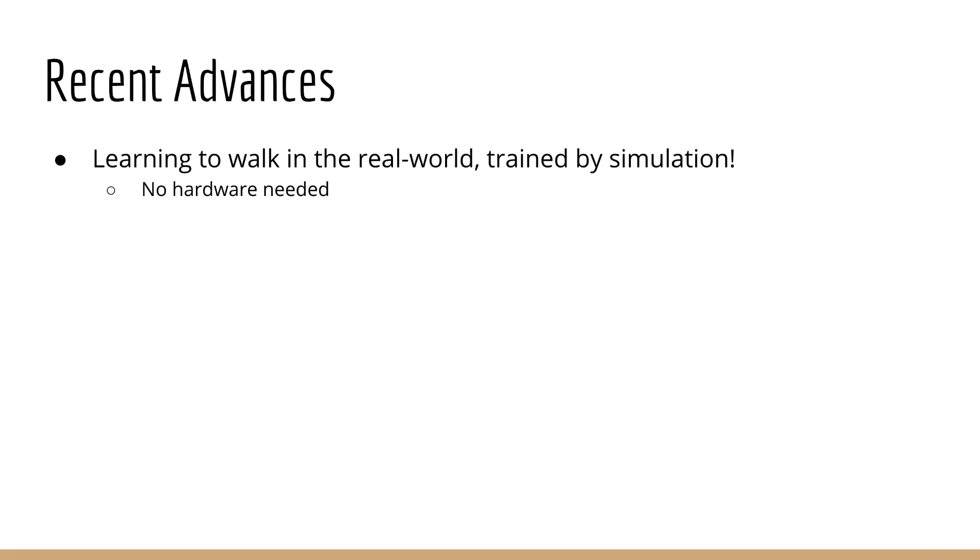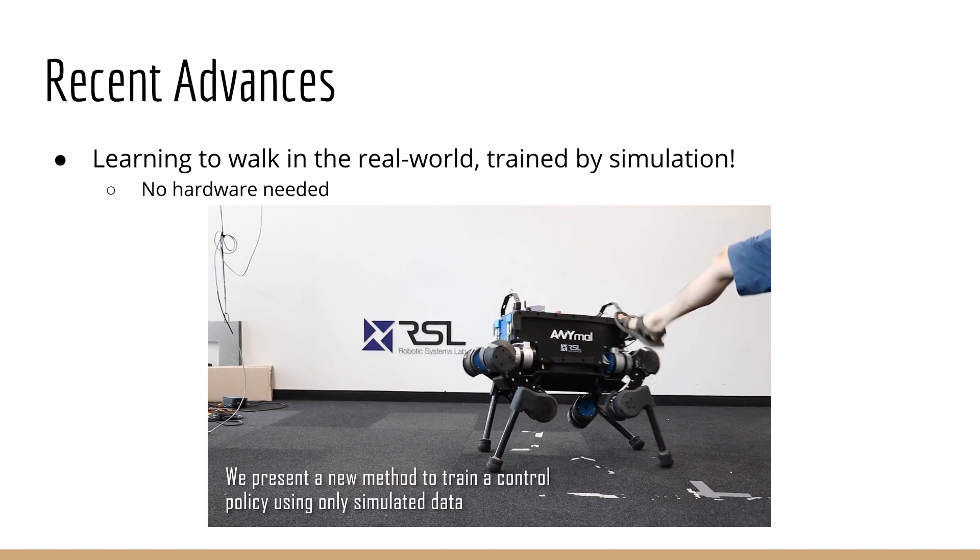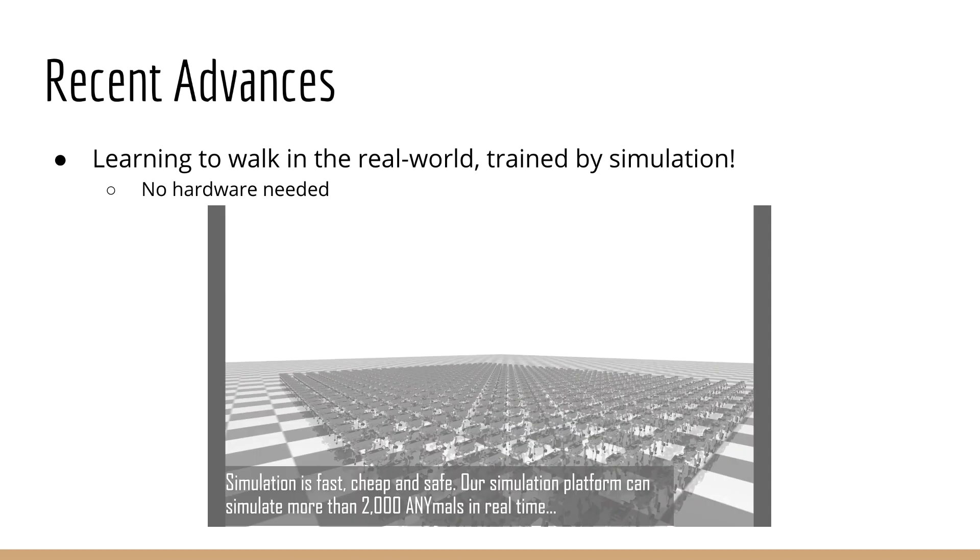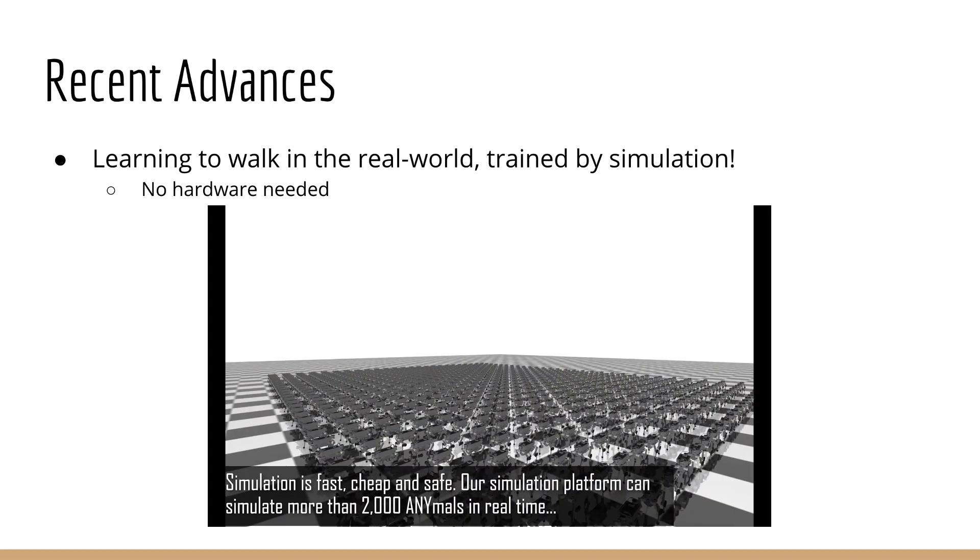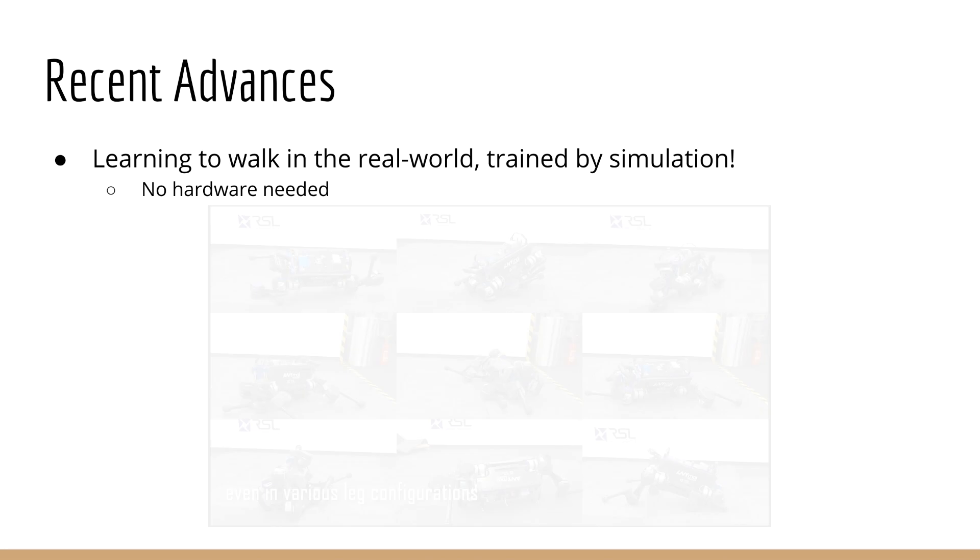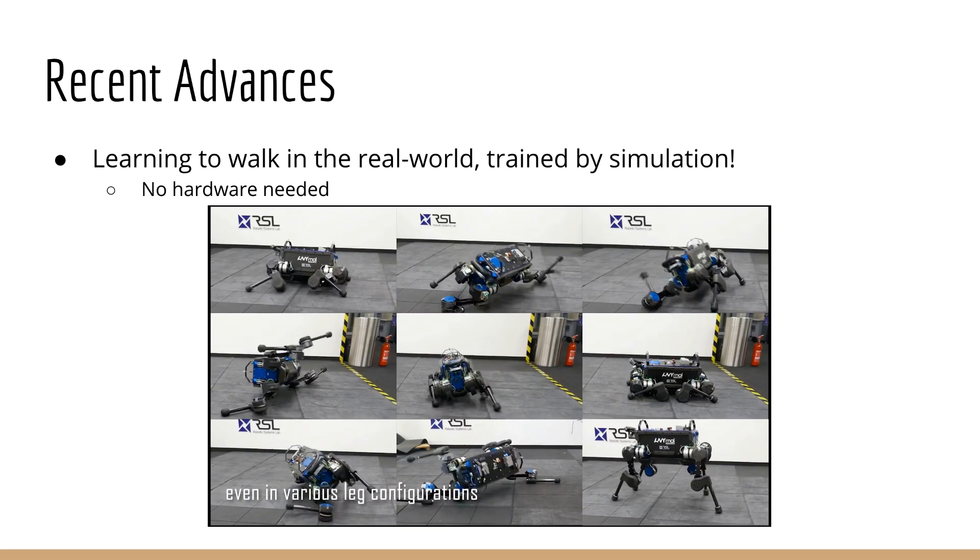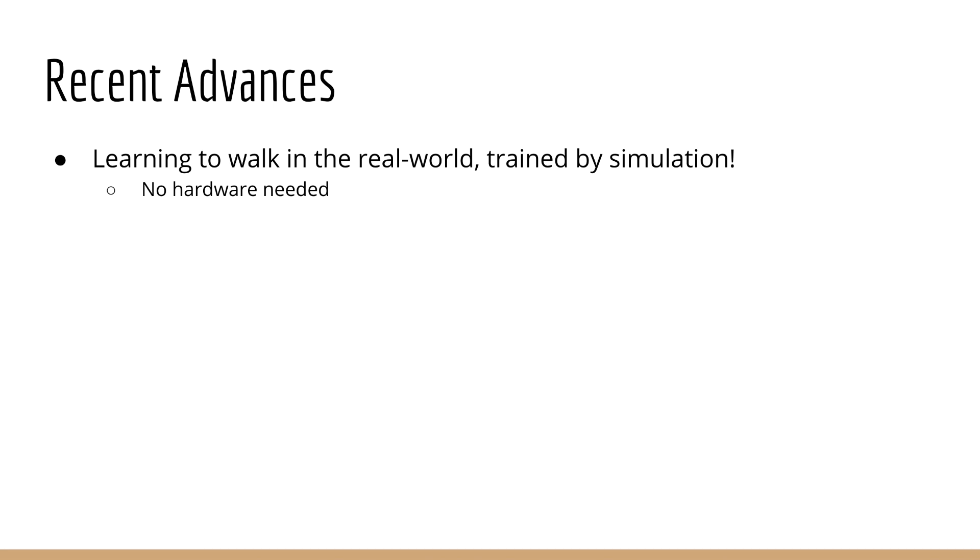We've seen agents learn how to walk and even recover after being kicked over, where they trained using simulation. Simulation is important because it doesn't require actual hardware, which is expensive, and if your agent falls down, no real damage is done.